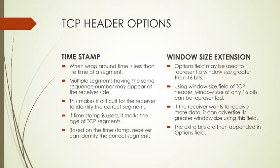The timestamp option helps protect against wrapped sequence numbers, which can happen when transmitting very large streams of data — multiple segments with the same sequence number may appear at the receiver. If a timestamp is used, it marks each TCP segment, allowing the receiver to identify the correct segment based on the timestamp. The window size extension option may be used to represent a window size greater than 16 bits; if the receiver wants to receive more data, it can advertise a greater window size using this field, with the extra bits appended in the options field.